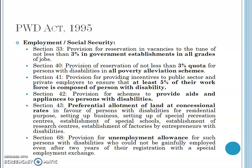Section 41 provides for giving incentives to public sector and private employers to ensure that at least 5% of their workforce is composed of persons with disability, so that employment for disabled people is promoted. Section 42 provides for schemes to supply aids and appliances to persons with disability, such as wheelchairs or hearing aids. Section 43 provides for preferential allotment of land at concessional rates for persons with disability for residential purposes or for setting up businesses.